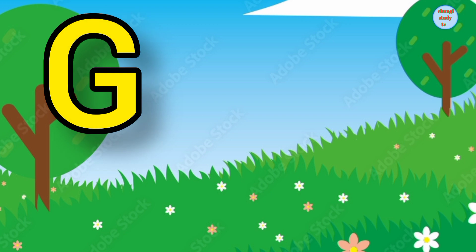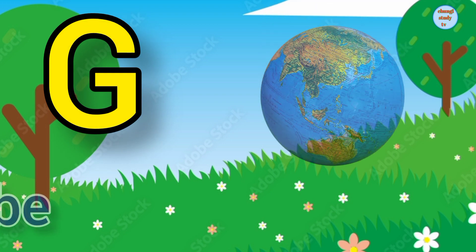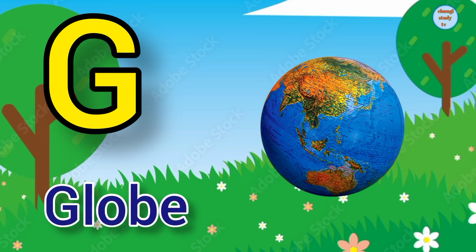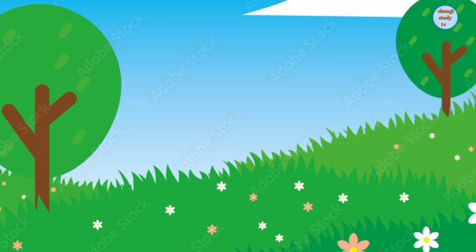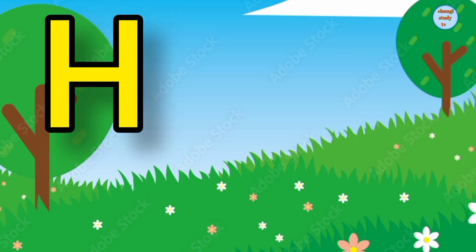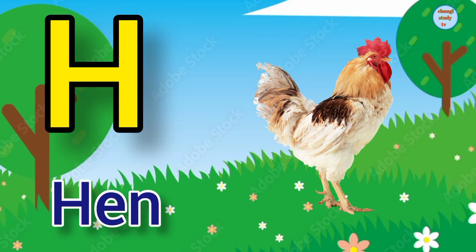G. G for globe, globe means manchit. H. H for hen, hen means murgi.